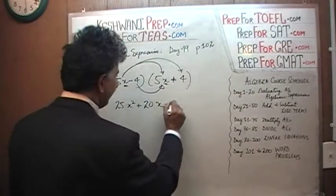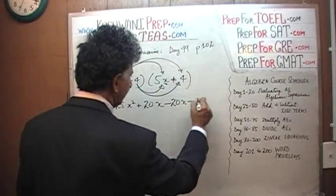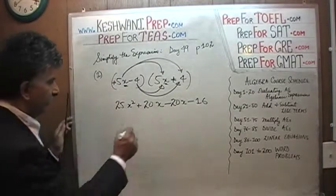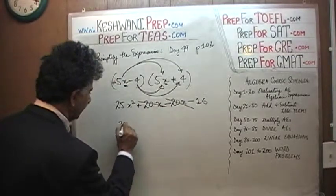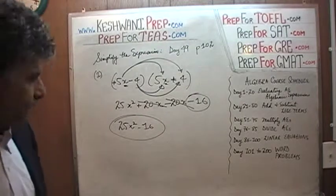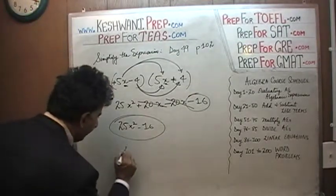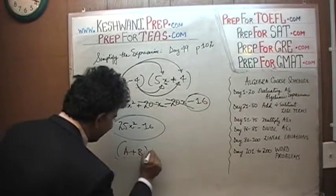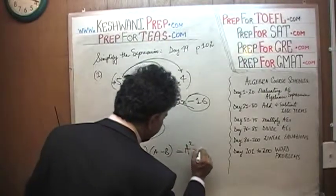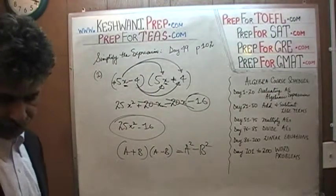Positive 5 is going to give us negative 20x, and negative 4 times positive 4 gives us negative 16. The middle two terms — positive 20x and negative 20x — cancel each other out, and we end up with 25x squared minus 16 as our final answer. For those who recognize this, it is the same as the pattern (a + b)(a − b) which equals a squared minus b squared — this is what is known as the difference of two squares.